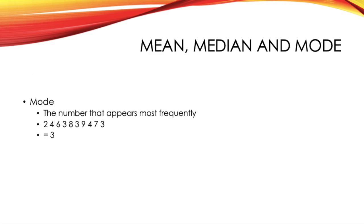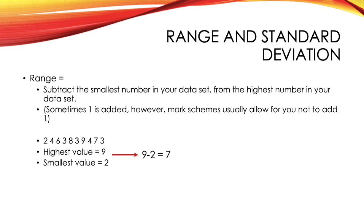You've then got the mode, and this is just simply the number that appears most frequently, and in our data set, this was 3. Next, you've got your range and standard deviation. So, in order to calculate the range, you need to subtract the smallest number in your data set from the highest number in your data set.